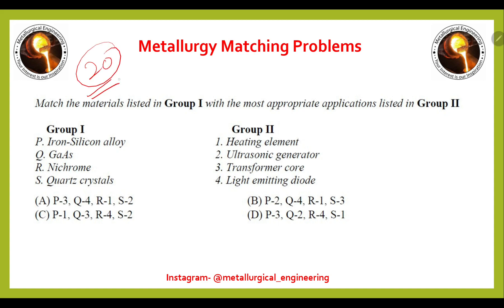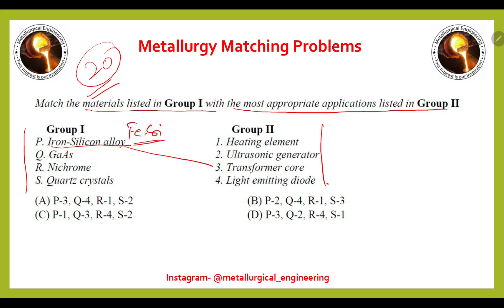This is the 20th and last matching problem for Part 2 — match materials with their most appropriate applications. Iron-silicon alloy (Fe-Si) is used for transformer cores, gallium arsenide (GaAs) for light emitting diodes, nichrome for heating elements, and quartz crystal for ultrasonic generators. The right answer is option A.